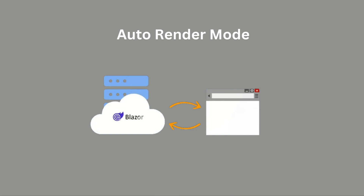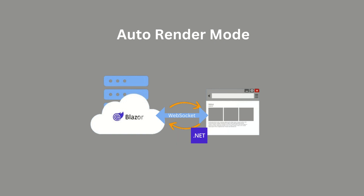Components utilizing the Auto mode are initially rendered from the server, while in the background the .NET WebAssembly runtime is downloaded. Upon completion of the download, the component automatically switches to WebAssembly-based rendering for future visits. So this page loads faster initially as it's rendered from the server, but afterwards the workload is entirely offloaded to the client and no connection with the server is needed.